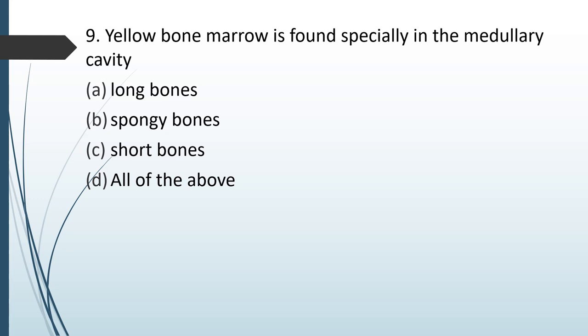Yellow bone marrow is found specially in: (A) medullary cavity of long bones; (B) spongy bones; (C) short bones; (D) all of these. The correct answer is option A — long bones.